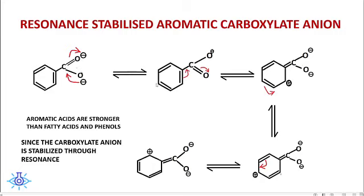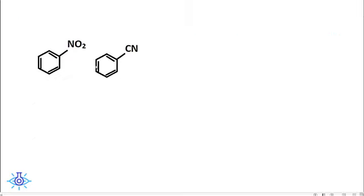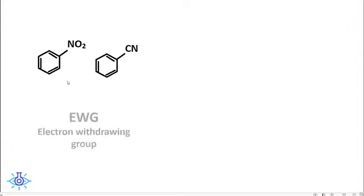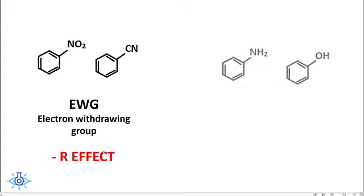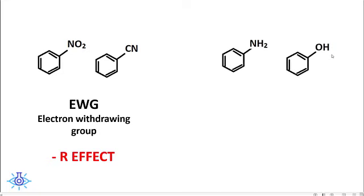Electron-withdrawing groups like NO₂ and CN attached to the benzene ring increase the acid strength due to the minus R effect. Electron-releasing groups like NH₂ and OH release electrons and decrease the acid strength by the plus R effect.